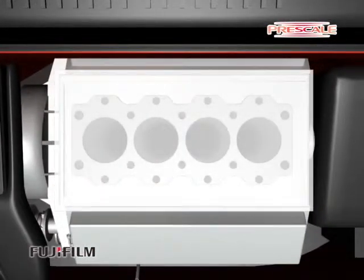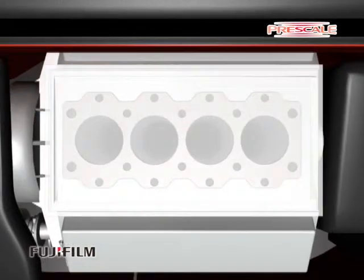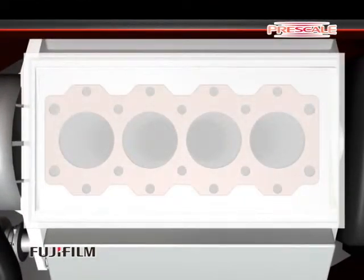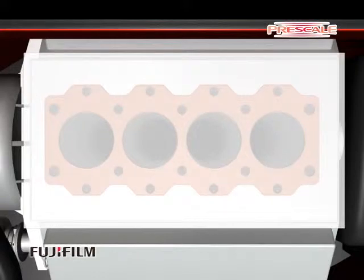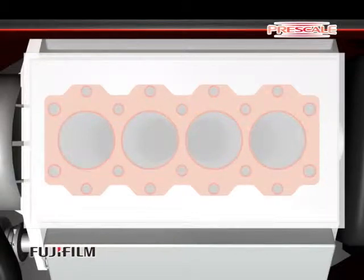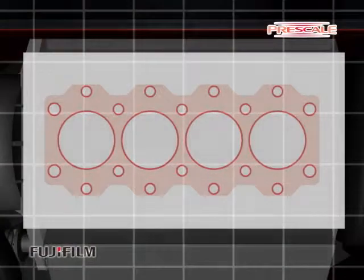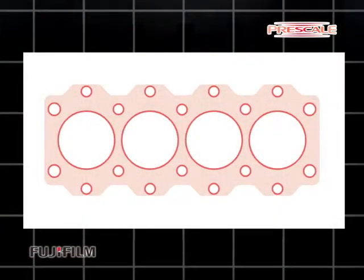When you remove the bolts, the Prescale will display the pressure distribution map with the red color chart. It is very easy to visualize where the highest and lowest pressure points are, as well as areas of non-contact. Red color density means pressure density.